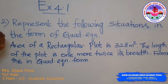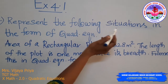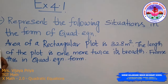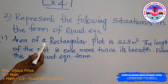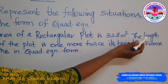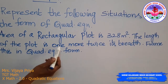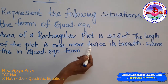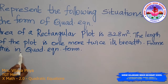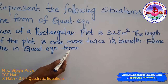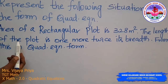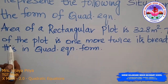Second problem: represent the following situation in the form of a quadratic equation. The first problem states that the area of a rectangular plot is 328 square metres. We need to frame this situation as a quadratic equation.